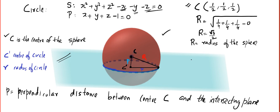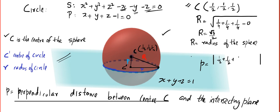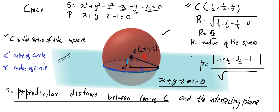P stands for the perpendicular distance between the center — that is (1/2, 1/2, 1/2) — and the plane x + y + z = 1. Using the distance formula, that is |1/2 + 1/2 + 1/2 − 1| divided by the length of the normal, which gives me 1/(2√3).